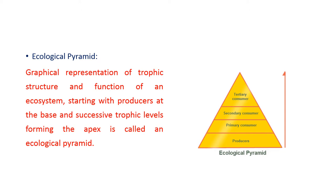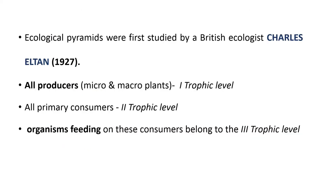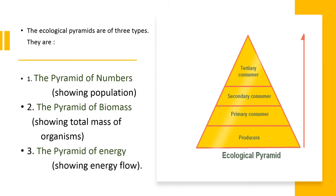Generally, the apex is very less because the organisms that are predators, which feed upon other organisms for food, are less in number in an ecosystem. Ecological pyramids were first studied by British ecologist Charles Elton in 1927. There are three types of ecological pyramids: pyramid of numbers, pyramid of biomass, and pyramid of energy.